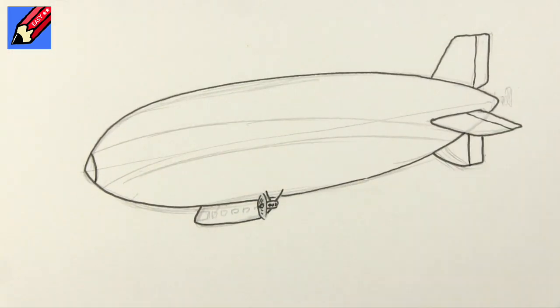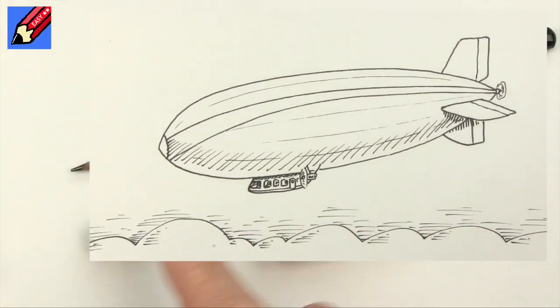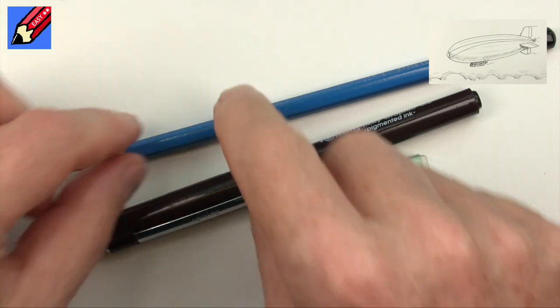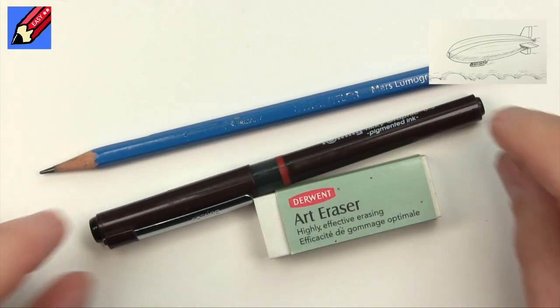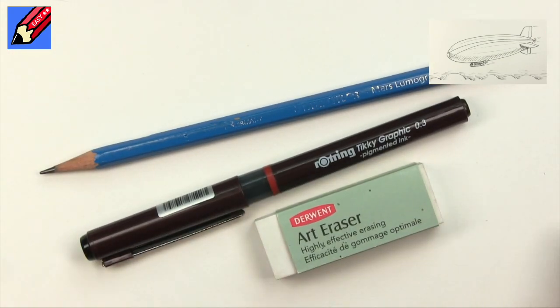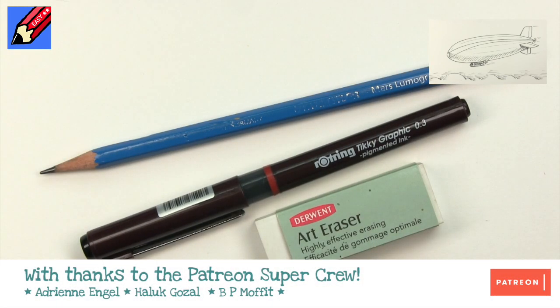Hey shooby-doodlers, today I'm going to show you how to draw an airship. The Draw Stuff Real Easy way is to draw it gently in pencil first, then ink on the top, and then erase the pencil lines afterwards. Let's not talk about it, let's do it!